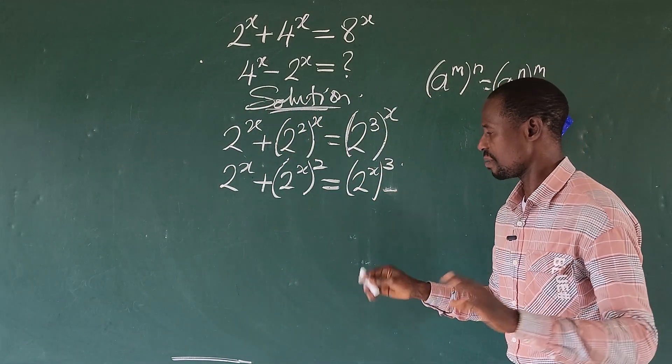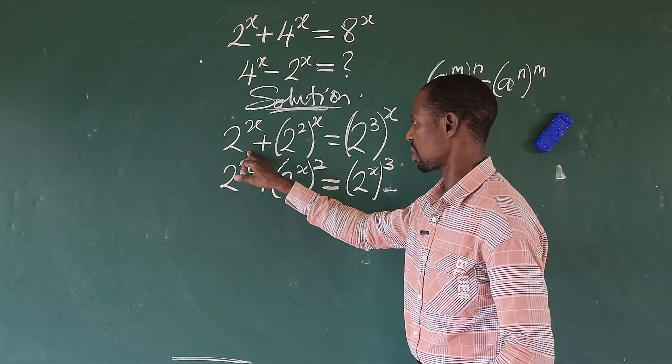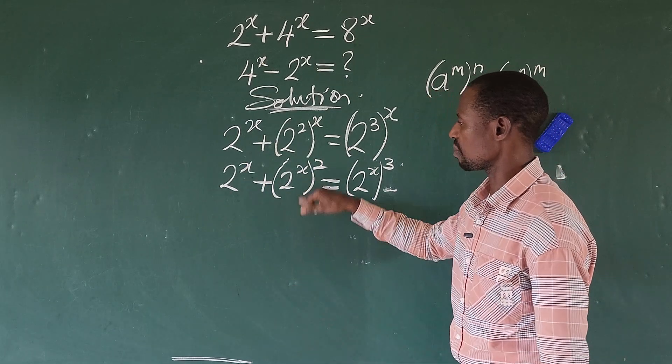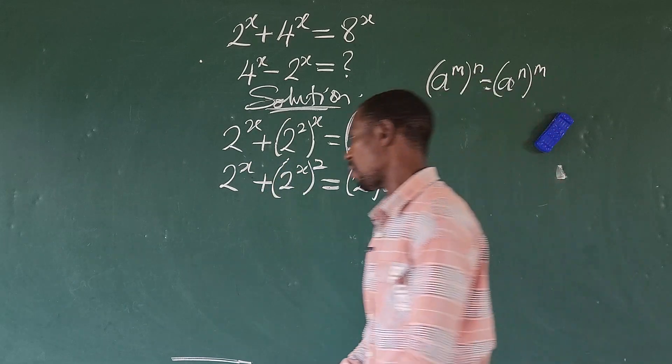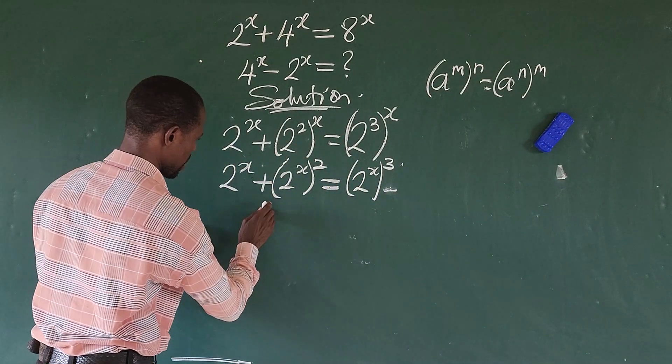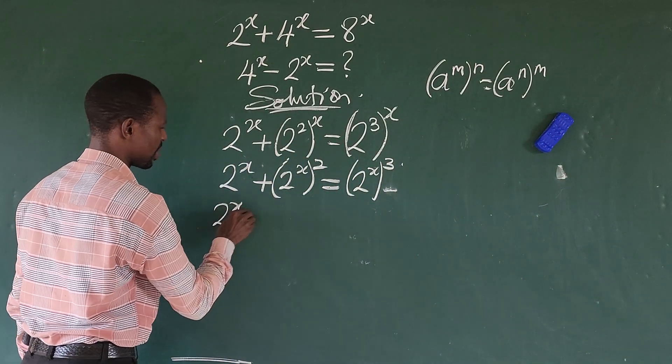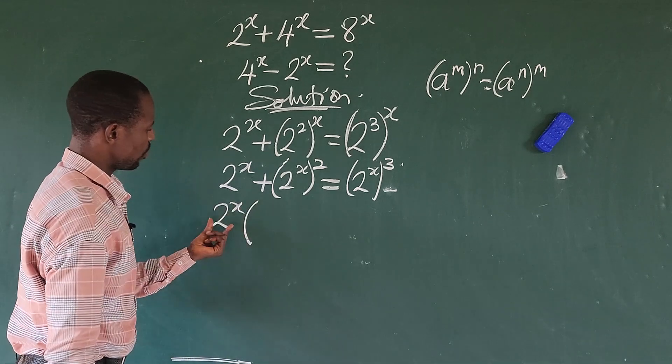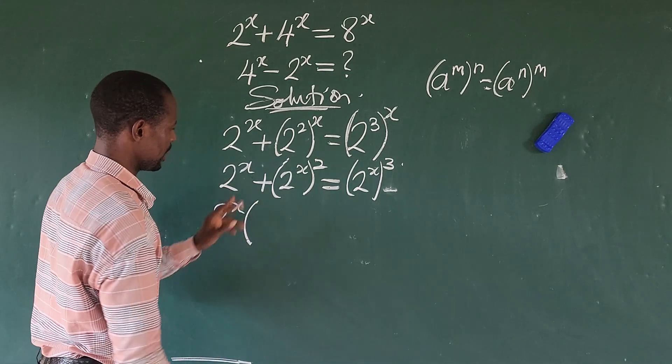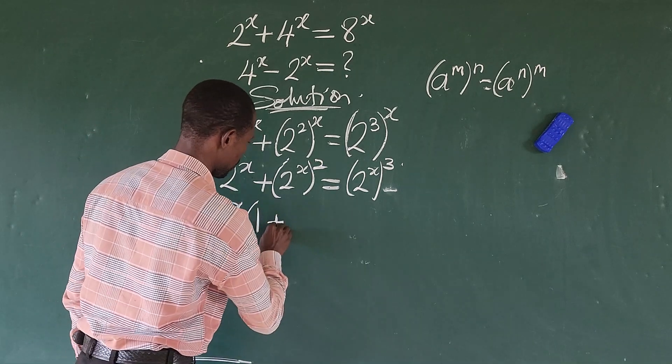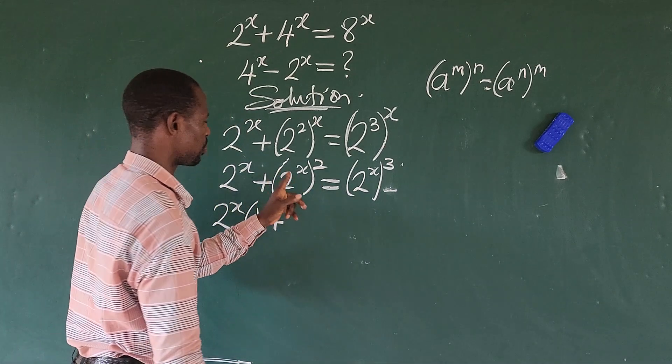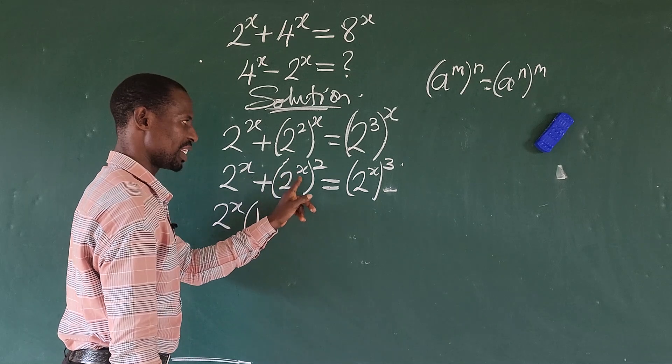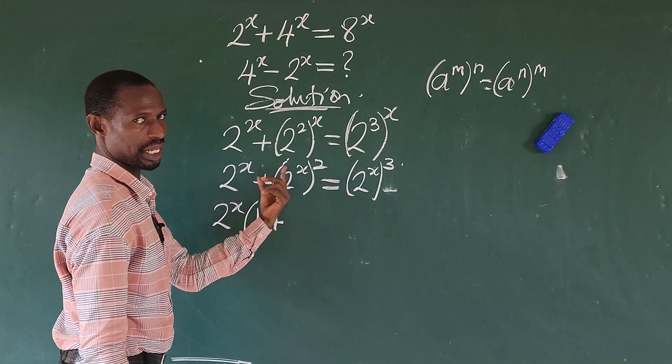So what we do next here is simple. Look, we are having 2 to the power of x here and 2 to the power of x here. So let's factor out 2 to the power of x on the left hand side of our equation. So we're going to have 2 to the power of x bracket. We use this to divide this, we are left with 1 here plus, if we use this to divide this, what will happen?